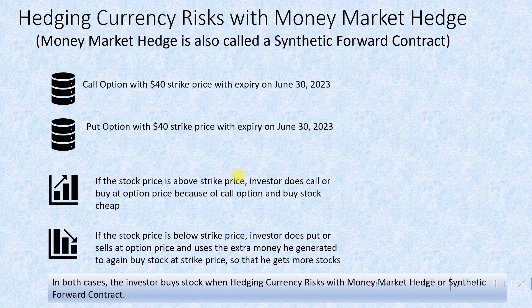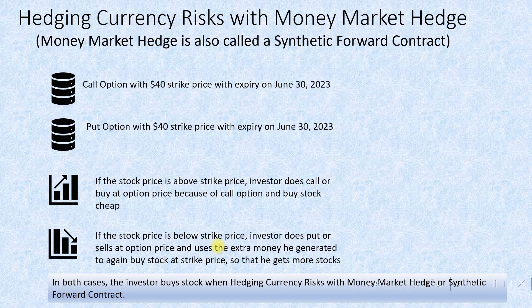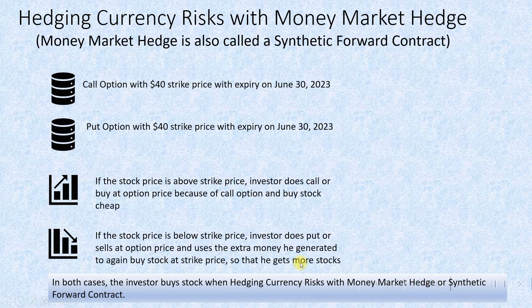The stock price can also go below the strike price, in which case the investor exercises the put option and sells the stock at the $40 strike price, receiving more value since the market price is lower. He then uses that extra money generated to buy stock again at the strike price, acquiring more shares.